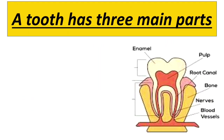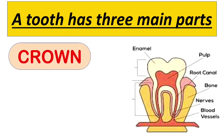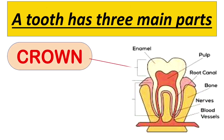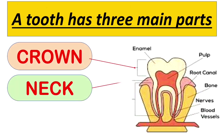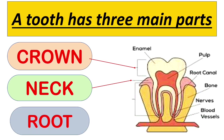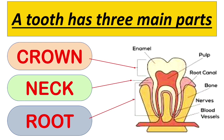A tooth has three main parts, and they are: crown, that is the uppermost part of the teeth; neck, that is next to the crown and it lies between crown and root; and the third one is root, that is the bottommost part of our tooth.